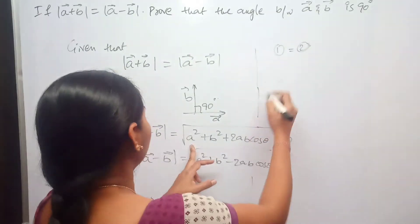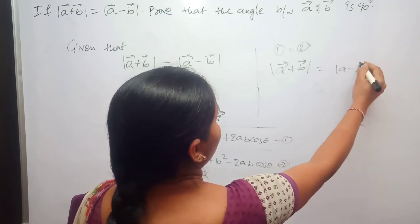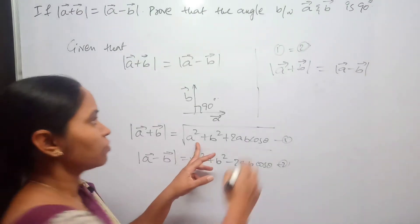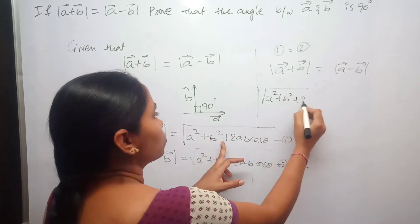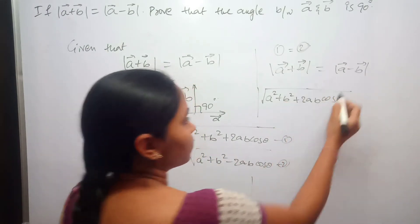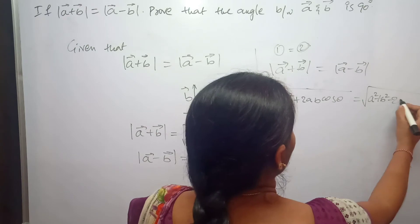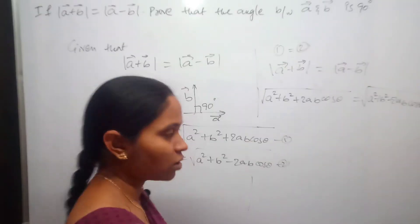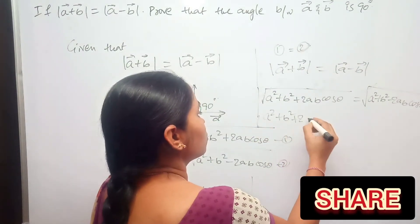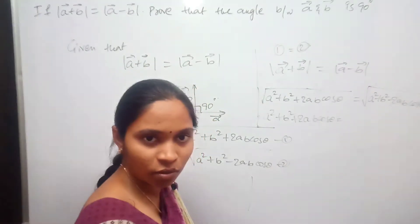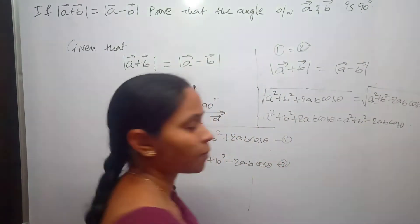Now equate equations 1 and 2: magnitude of a+b equals magnitude of a−b, so square root of a² + b² + 2ab cosθ equals square root of a² + b² − 2ab cosθ. The square roots cancel, leaving a² + b² + 2ab cosθ = a² + b² − 2ab cosθ. The a² and b² terms cancel on both sides.